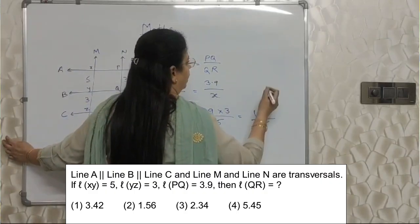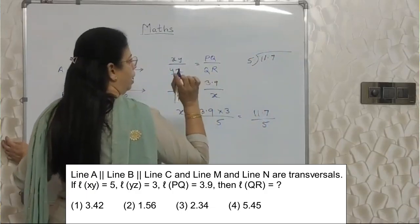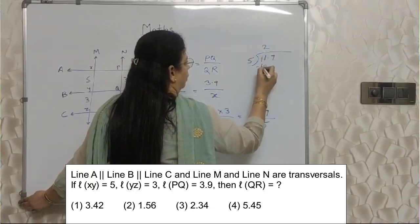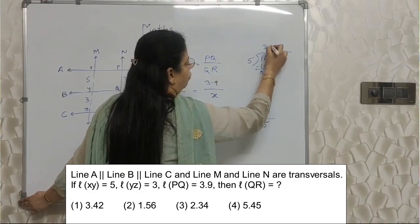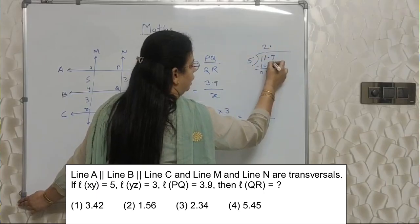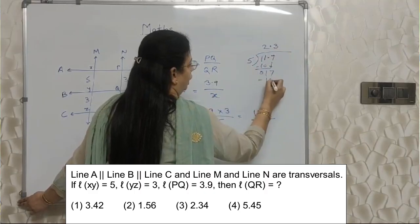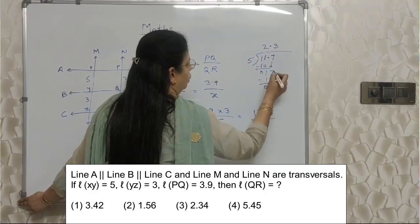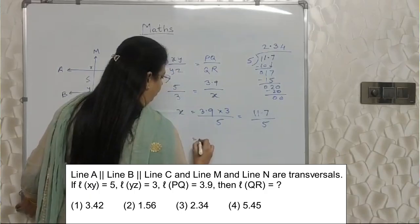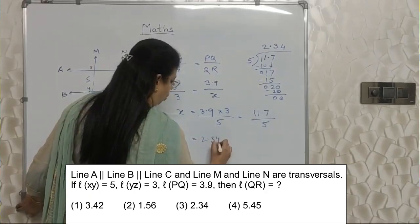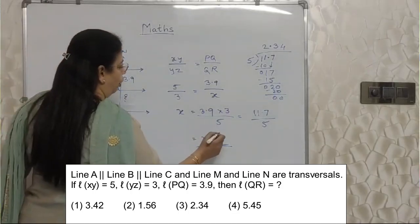If you are not comfortable doing it that way, you can do it like this — no problem. We want 2 marks. 5 twos are 10, remainder 1. Before touching this decimal, we have to place the decimal here, then bring down this 7. Now 5 threes are 15, remainder 2. Then again 0. 5 fours are 20. So the answer is 2.34. QR is equal to 2.34.